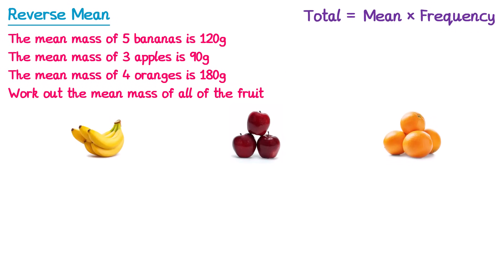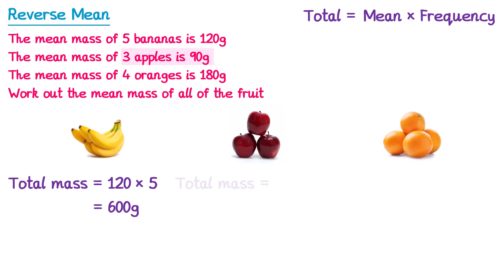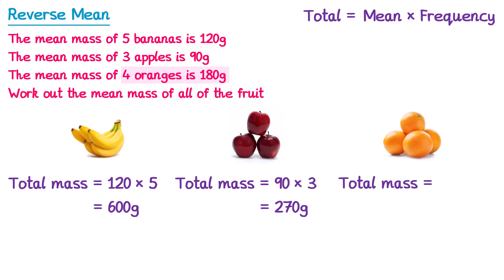Let's do this for each fruit separately. For the 5 bananas where the mean is 120 grams, we multiply the mean, 120, by how many bananas there are, which is 5. 120 times 5 is 600, so the total mass of all bananas is 600 grams. For the 3 apples with a mean of 90 grams, we multiply 90 by 3 to get a total mass of 270. And for the 4 oranges, the mean is 180, so 180 multiplied by 4 gives a total mass of 720 grams.